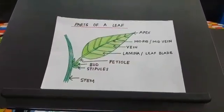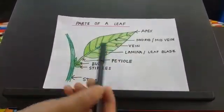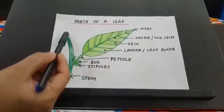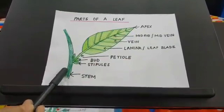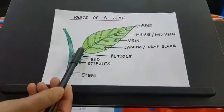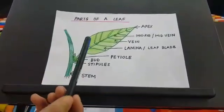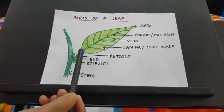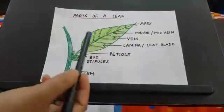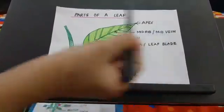Now let us know about the parts of a leaf. The flat part of the leaf is called the lamina or the leaf blade. The thin stalk-like structure that is attached to the stem is called petiole. The tip of the leaf is called apex. This is called the base of the leaf. From the base of the leaf till the apex of the leaf arises a thin tube-like structure called the midrib or mid-vein.